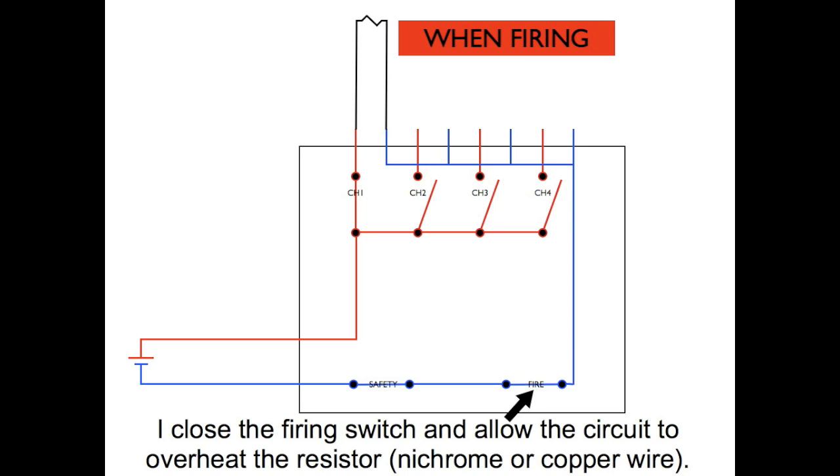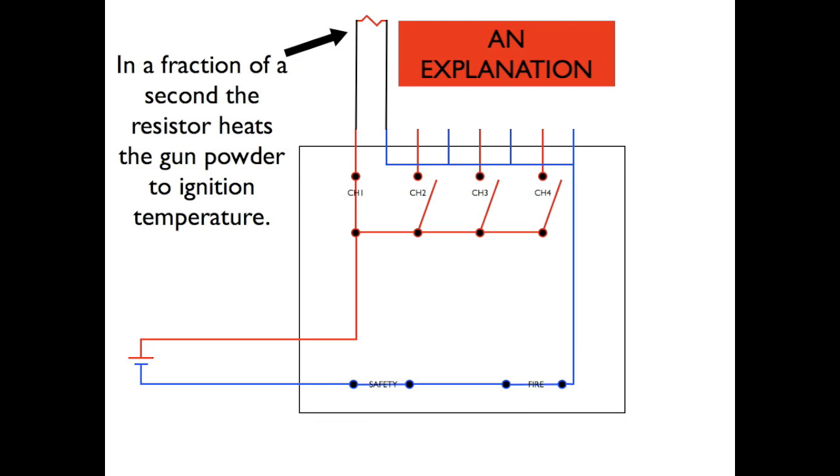The resistor will begin to heat up and my charge should go off. If all goes well, in a fraction of a second, the resistor should reach the ignition temperature of the gunpowder and the charge should ignite. If this happens, you have a successful ignition.